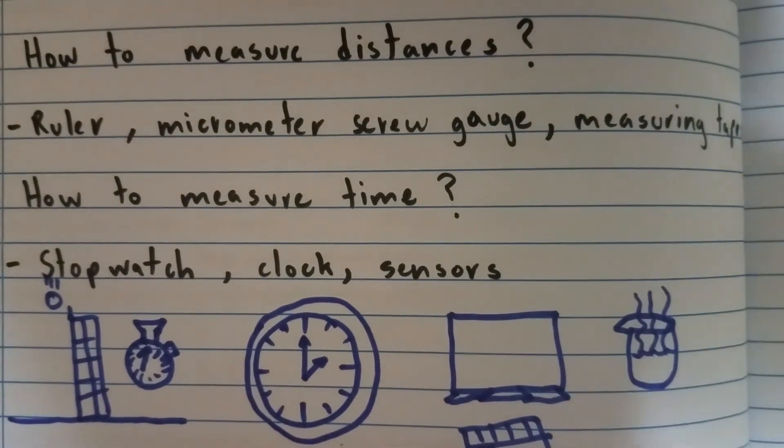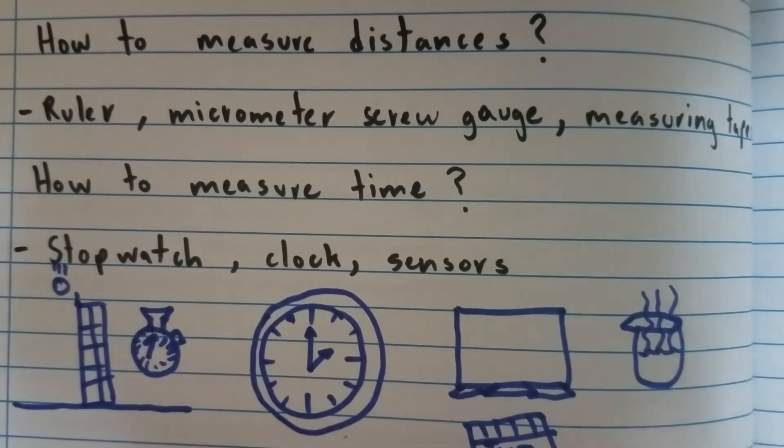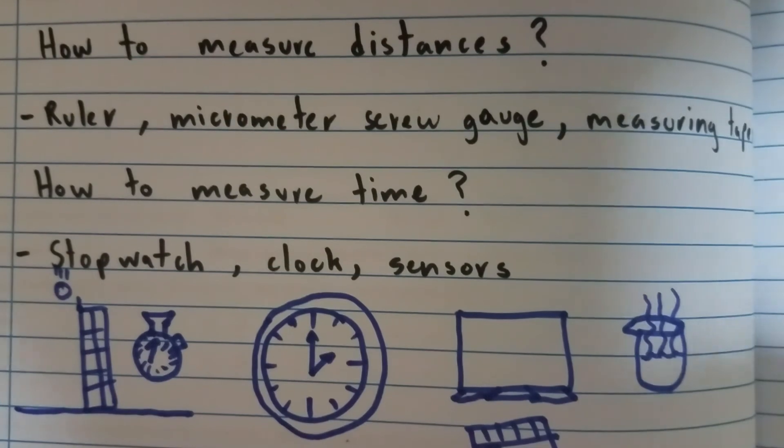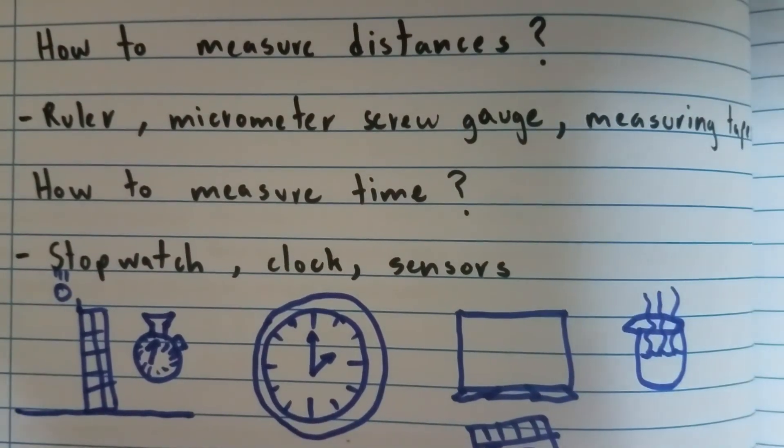So yeah computers are more accurate but generally in physics you'd use a stopwatch. In more professional terms you'd use a sensor linked to a computer and that can help you or automate your results.